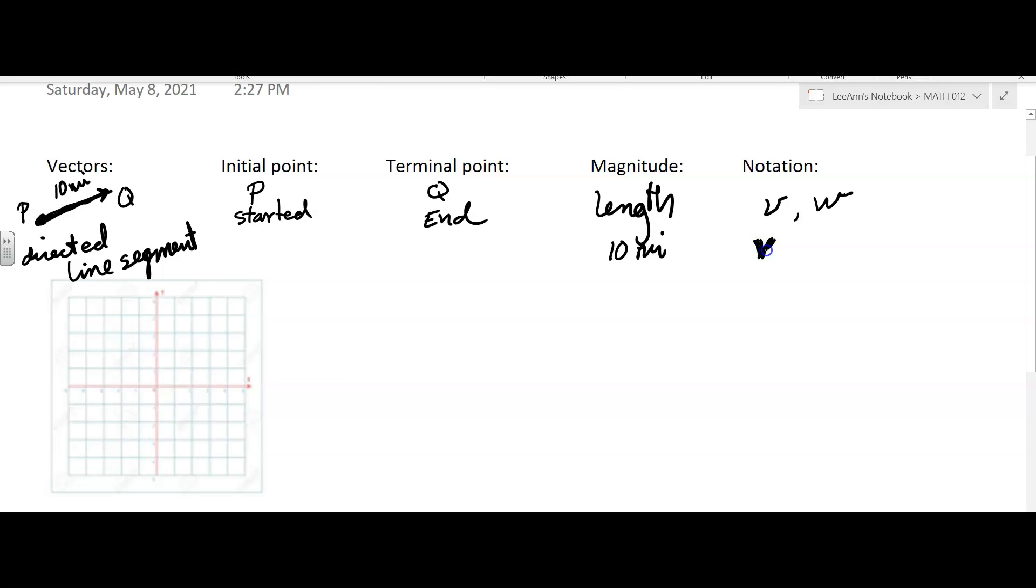Or they'll put an arrow above it to indicate that it's a vector. So those are different ways that they can show the vector notation.